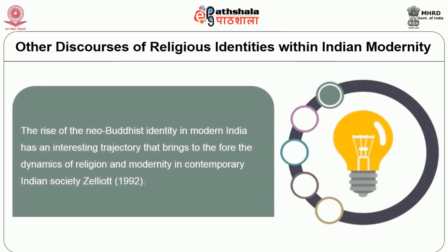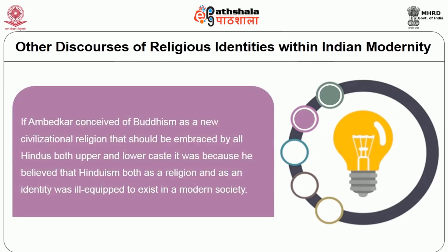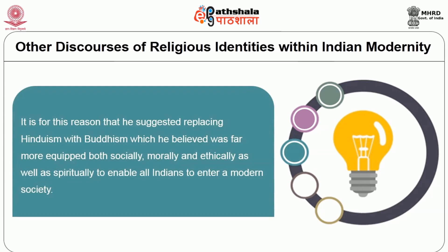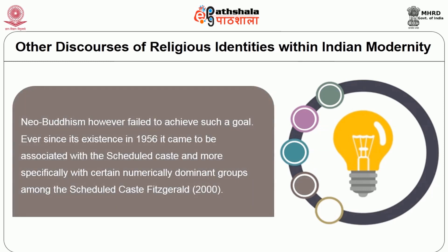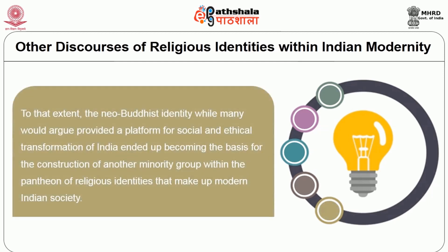The rise of neo-Buddhist identity in modern India has an interesting trajectory that brings to the fore the dynamics of religion and modernity in contemporary Indian society. If Ambedkar conceived of Buddhism as a new civilizational religion that should be embraced by Hindu upper and lower castes, it was because he believed that Hinduism both as a religion and as an identity was ill-equipped to exist in a modern society. It is for this reason that he suggested replacing Hinduism with Buddhism, which he believed was far more equipped — socially, morally, ethically, and spiritually — to enable all Indians to enter into a modern society. Neo-Buddhism, however, failed to achieve this goal. Ever since 1956, it came to be associated with the scheduled castes, and more specifically with certain numerically dominant groups among the scheduled castes. To that extent, the neo-Buddhist identity, while many would argue it provided a platform for social and ethical transformation of India, ended up becoming the basis for the construction of another minority group within the pantheon of religious identities that make up Indian society.